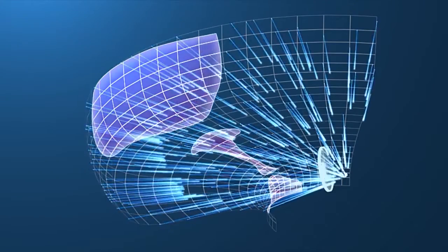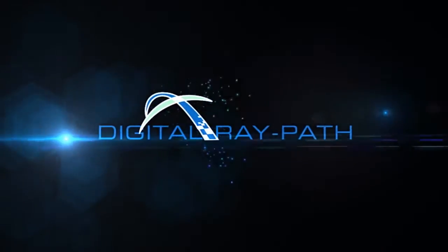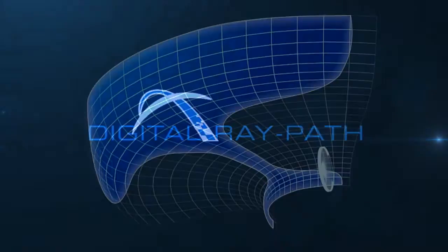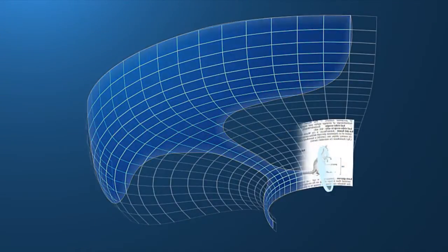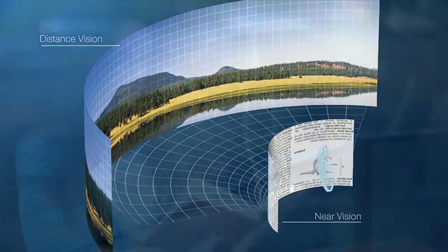For this reason, HB Optical has integrated the Digital Ray Path technology in all Franklin Freeform lenses, making these zones maximized and optimized for both the biometrics of the wearer and the shape of the frame.